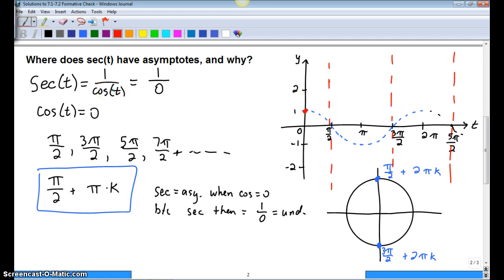Because if cosine is 1, secant is 1 over 1. And if cosine is negative 1, secant is 1 over negative 1. So we always end up with a 1 or negative 1.